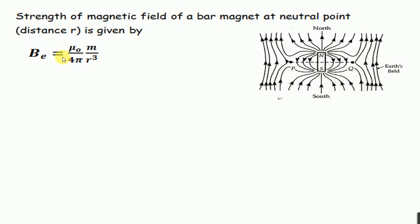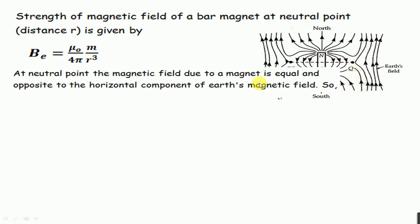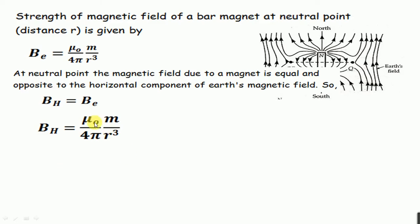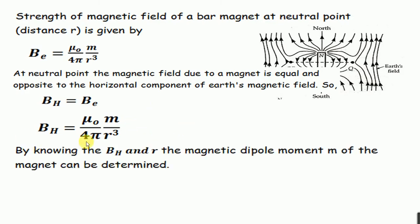The strength of the magnetic field due to the bar magnet at the equatorial line is given by the formula: B_e = (μ₀/4π) × m/r³. We have already derived this formula in our previous videos. At the neutral point, the magnetic field of the magnet and the horizontal component of Earth's magnetic field are equal, so B_H = B_e. Putting in the value of B_e, you can find m — the magnetic dipole moment — which can also be written as m = 2l × q_m.